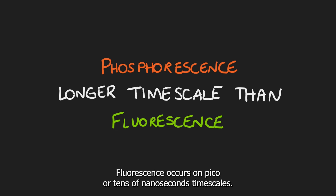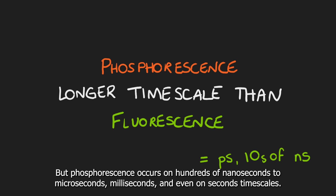Fluorescence occurs on picosecond or tens of nanoseconds timescales, but phosphorescence occurs on hundreds of nanoseconds to microseconds, milliseconds, and even on seconds timescales.